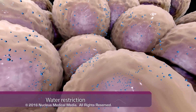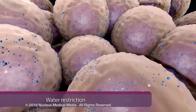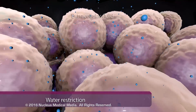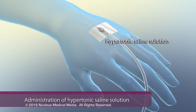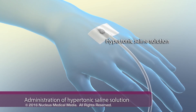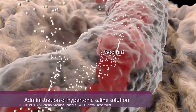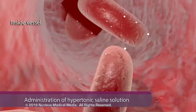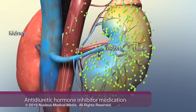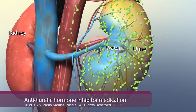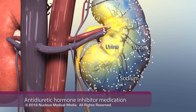Treatments for hyponatremia include water restriction, which allows the excess water to move, via osmosis, from the cell back into the extracellular fluid. Administration of hypertonic saline solution — a fluid with a higher sodium concentration than normal extracellular fluid — returns blood sodium to normal levels. Anti-diuretic hormone inhibitor medications help the kidneys retain electrolytes while increasing water excretion in urine.